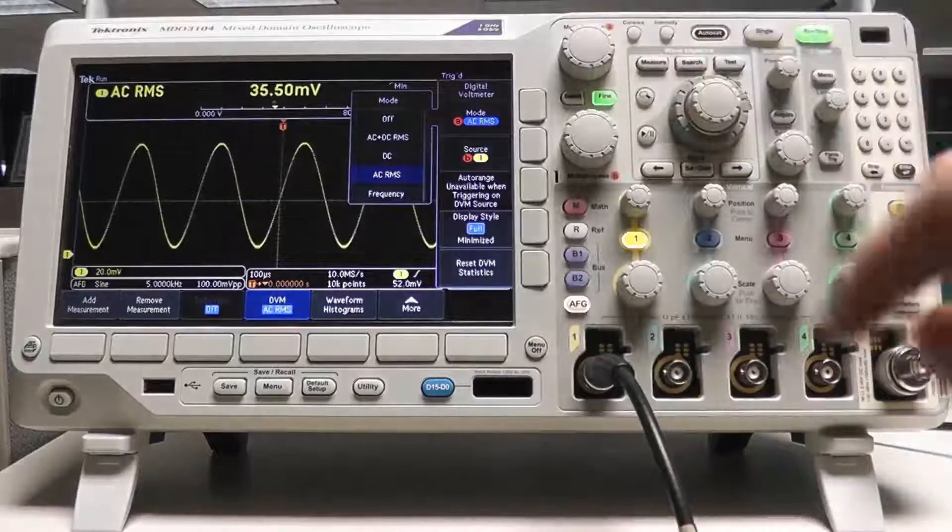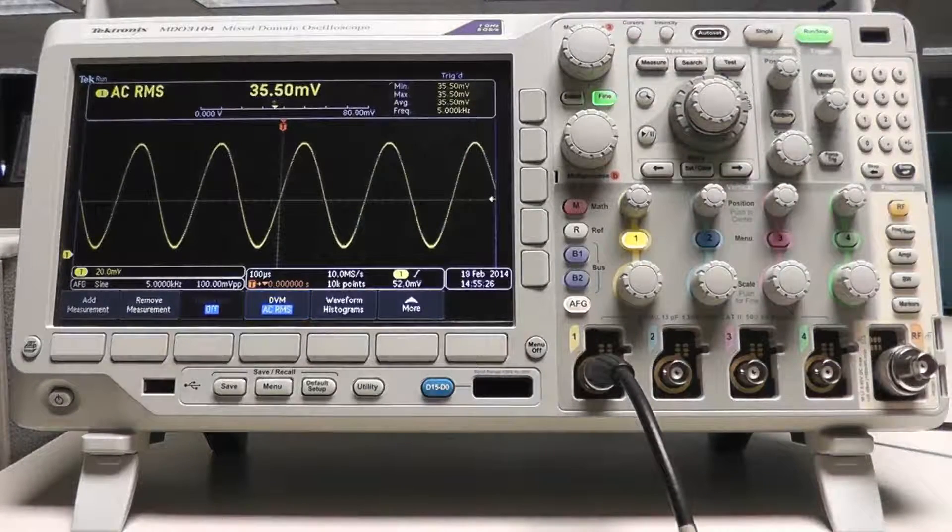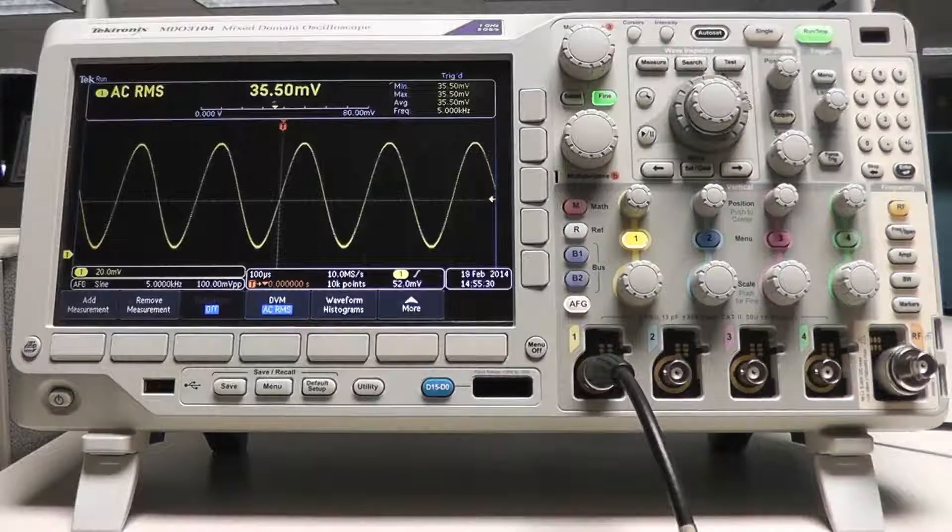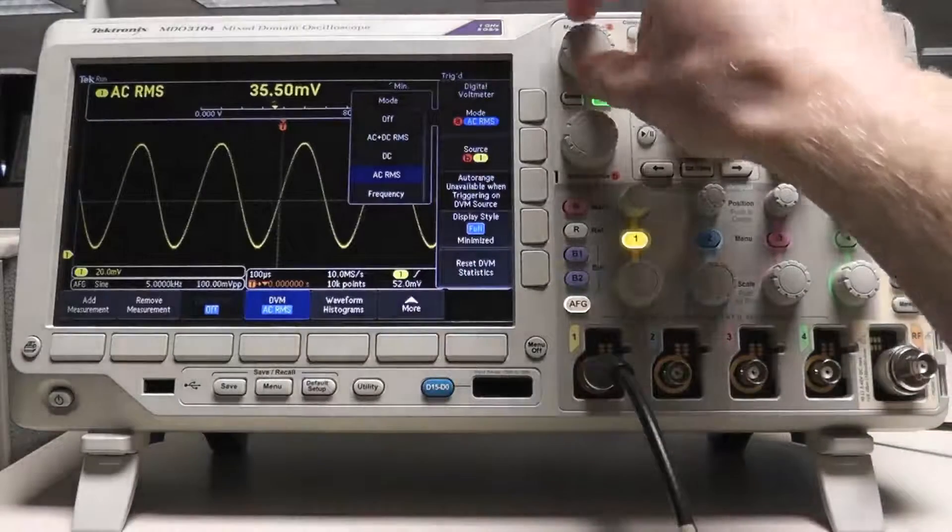Let's begin with ACRMS. Simply scroll down to the ACRMS option, and the DVM will automatically measure and display the ACRMS value of the signal from the selected source.